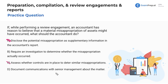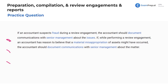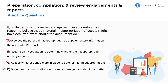Option D: document communications with senior management about the matter. We're in a review engagement — this is not a full-on audit. That's why maybe not letter B, because that sounds much more in scale and scope for an audit. For a review, we're doing limited procedures, limited assurance, just analytical procedures and things like that. So I'm going to cross off letter B and go with D. If we suspect fraud during a review engagement, we should document communications with senior management — that's our go-to, leaving us with letter D.